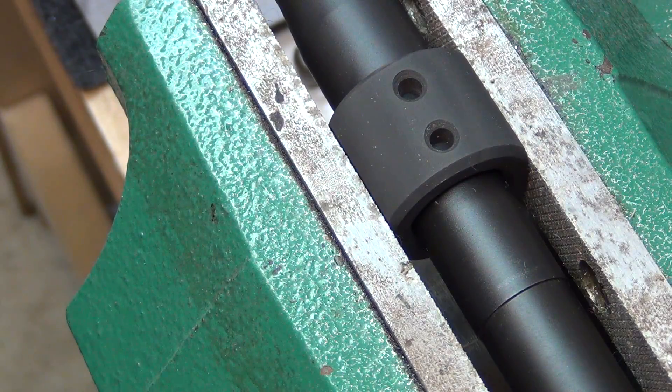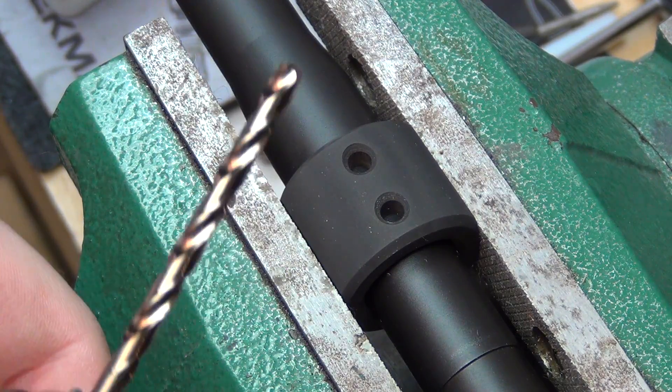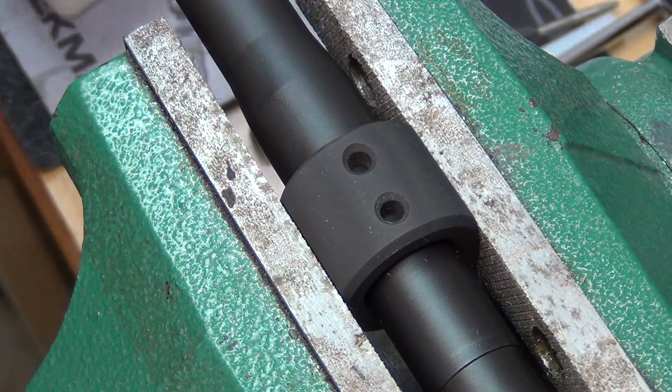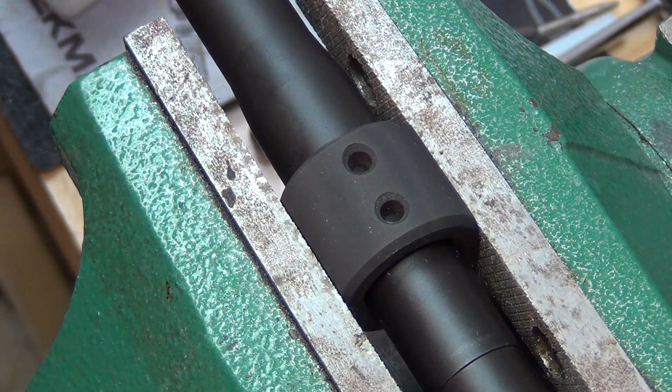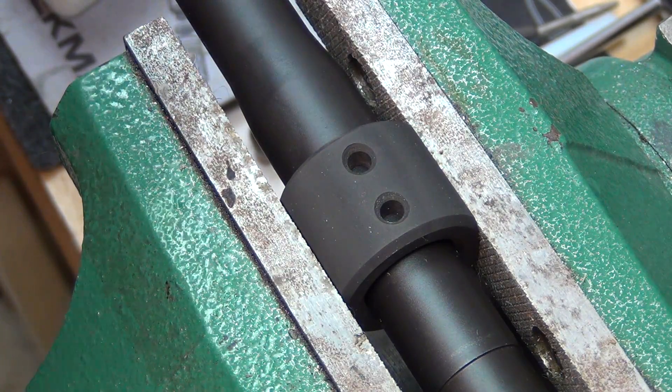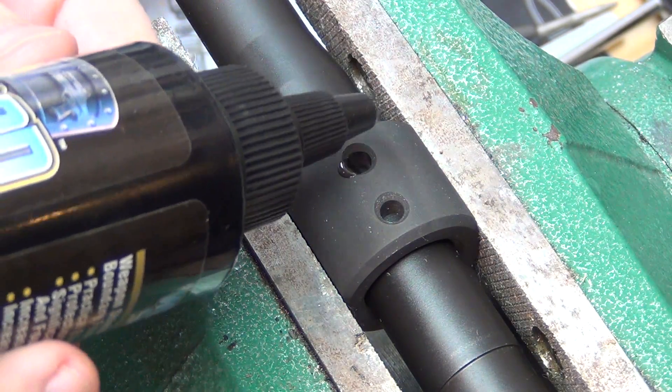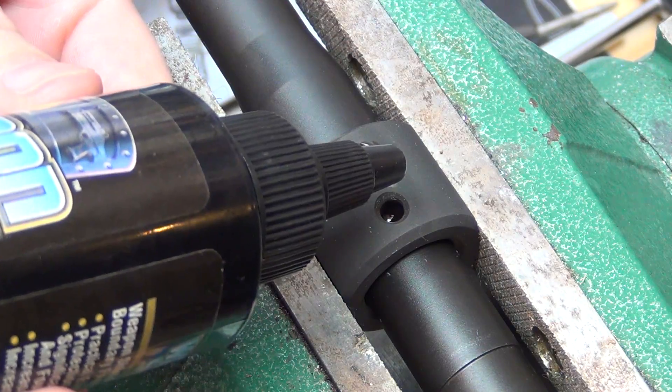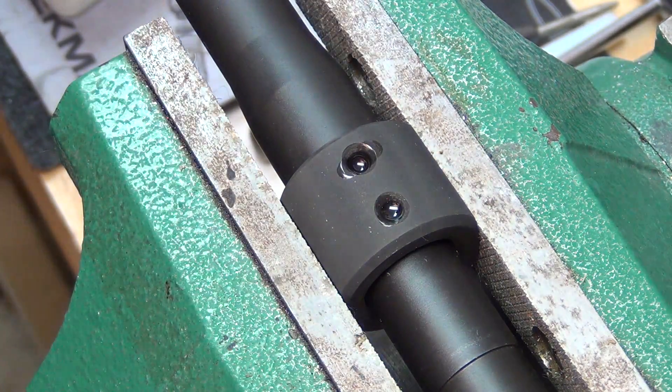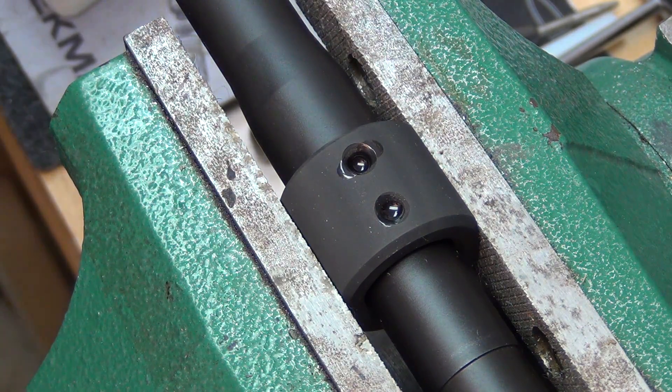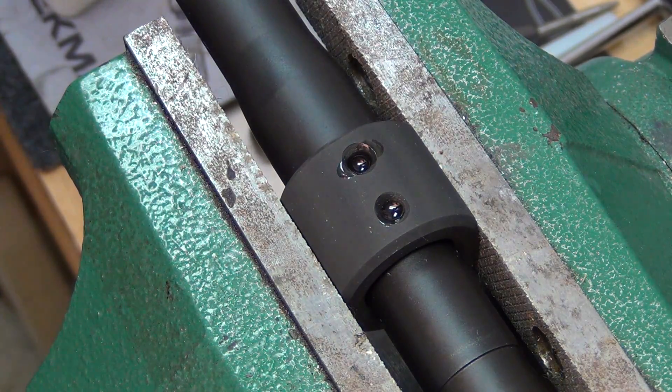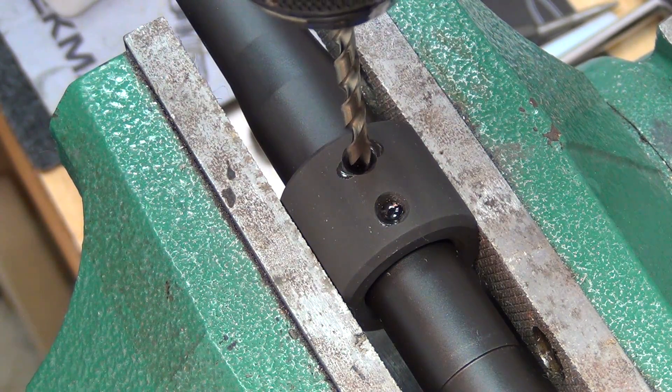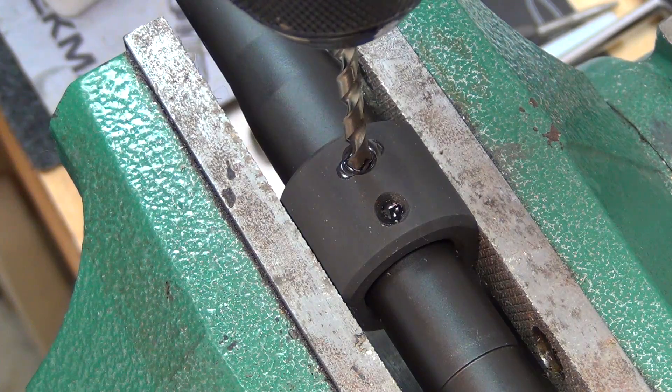I have this nice and secure in the vise. I'm just going to add a little bit of CLP just as some cutting fluid here, and then using slight pressure, just go ahead and drill it out.